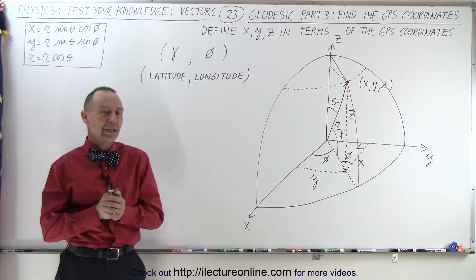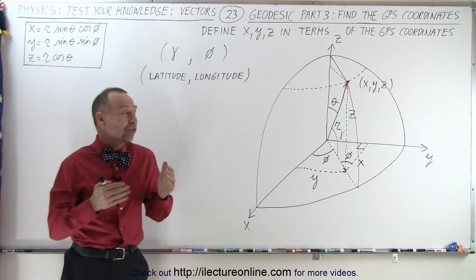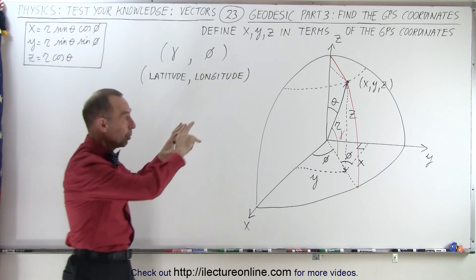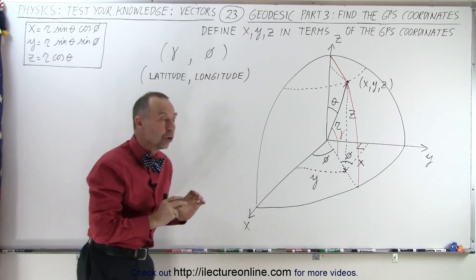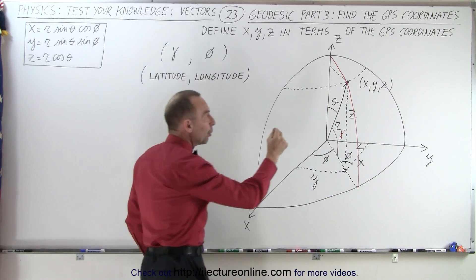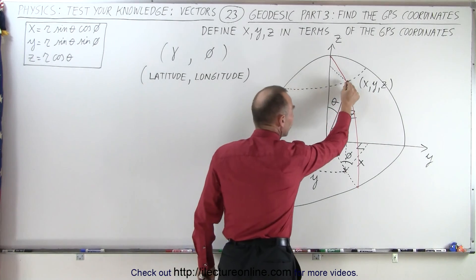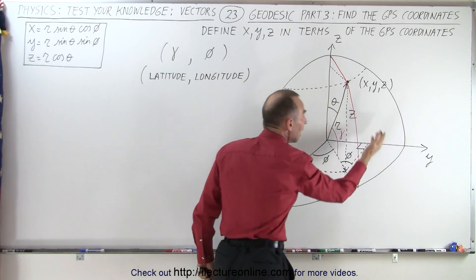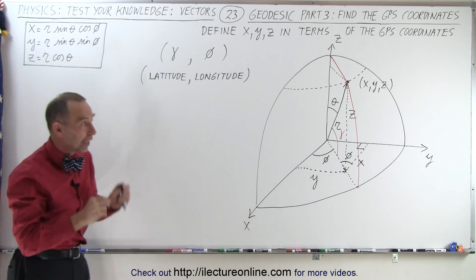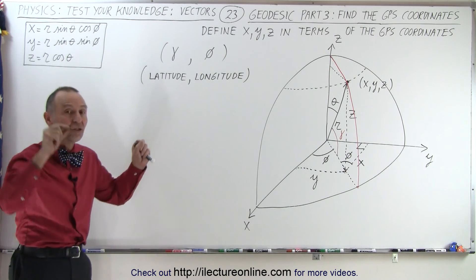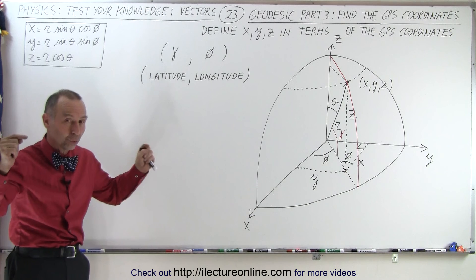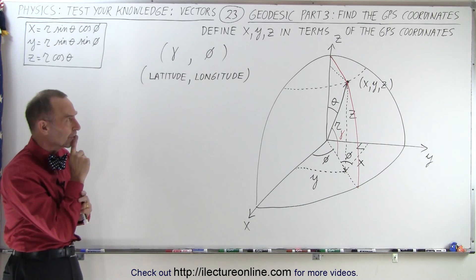Welcome to our Lecture Online. Our next venture here is trying to find a way to convert from spherical coordinates to the GPS coordinates, so that we can actually take any point on the surface of the Earth in terms of x, y, z, and convert that to GPS coordinates in order to find the geodesic between any two points on the Earth — the shortest distance between any two points.